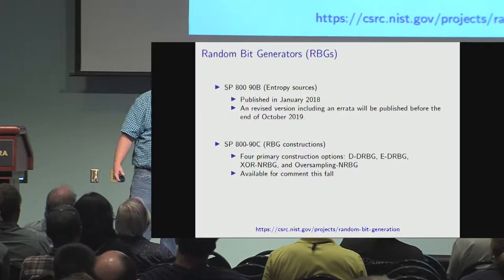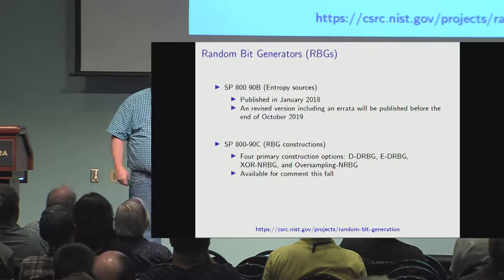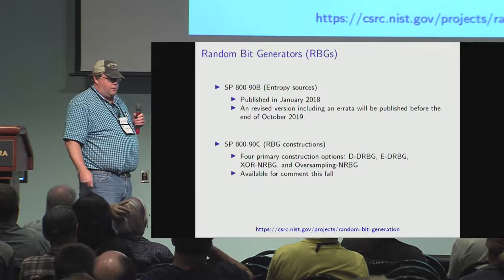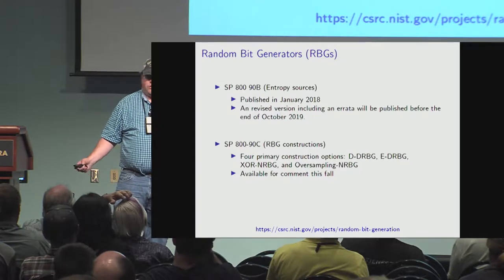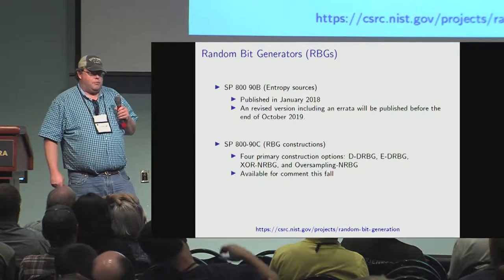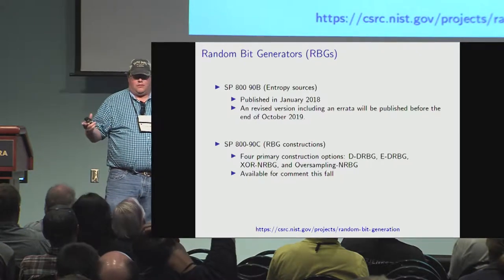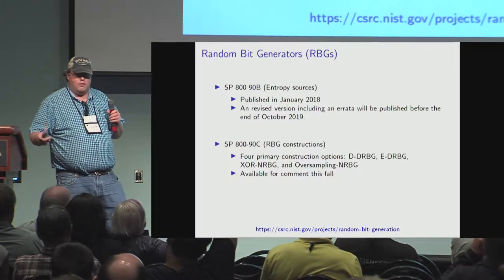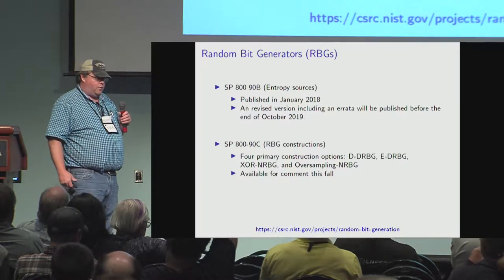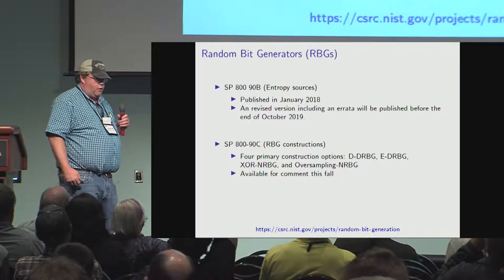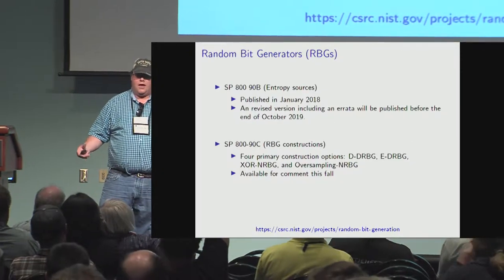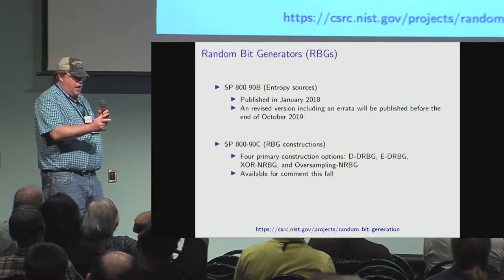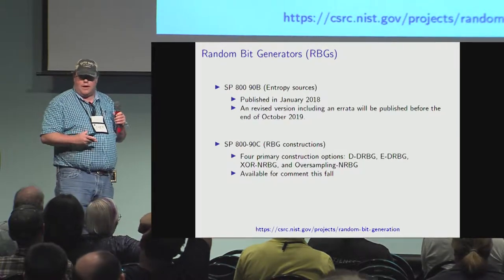Random bit generators is something I've been working on for basically my whole time at NIST. We recently — about a year to a year and a half ago — published SP 800-90B, which is the standard for entropy sources and source evaluation. We're collecting errata: errors in formulas, ambiguities, things like that, and we hope to put out a revised version soon. We also have SP 800-90C coming out soon, which is the final piece — it tells you how to take a DRBG from 90A and an entropy source from 90B and put them together to make a full random bit generator.